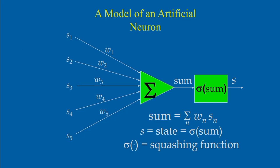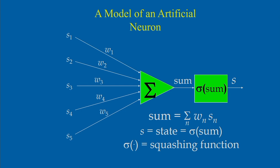Let us discuss the artificial neural network model. The signals S1, S2, S3, S4, S5 are the input signals, each multiplied with corresponding weights W1, W2, W3, W4, W5. We compute the weighted sum and compare it with a threshold determined by the squashing function sigma. If the sum signal is greater than a particular threshold, the output signal S is transmitted.